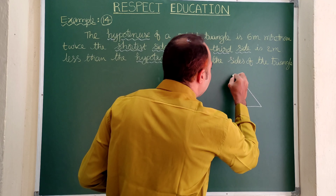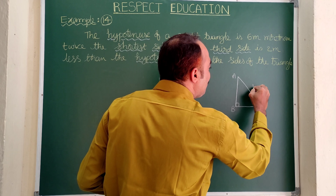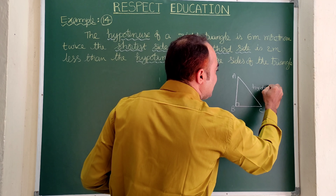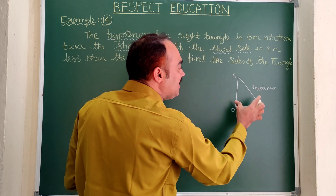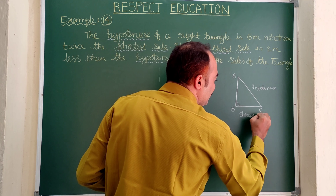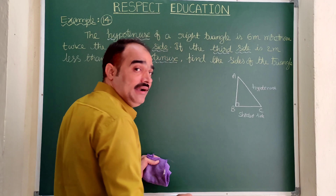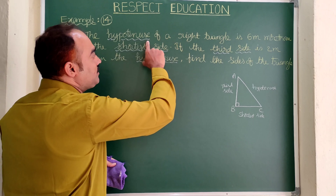Let us draw a suitable diagram for this data. Consider triangle ABC as a right angle triangle in which AC is the hypotenuse. If you measure AB and BC, clearly BC is the shortest side. So BC is the shortest side, AC is the hypotenuse, and AB is the third side.